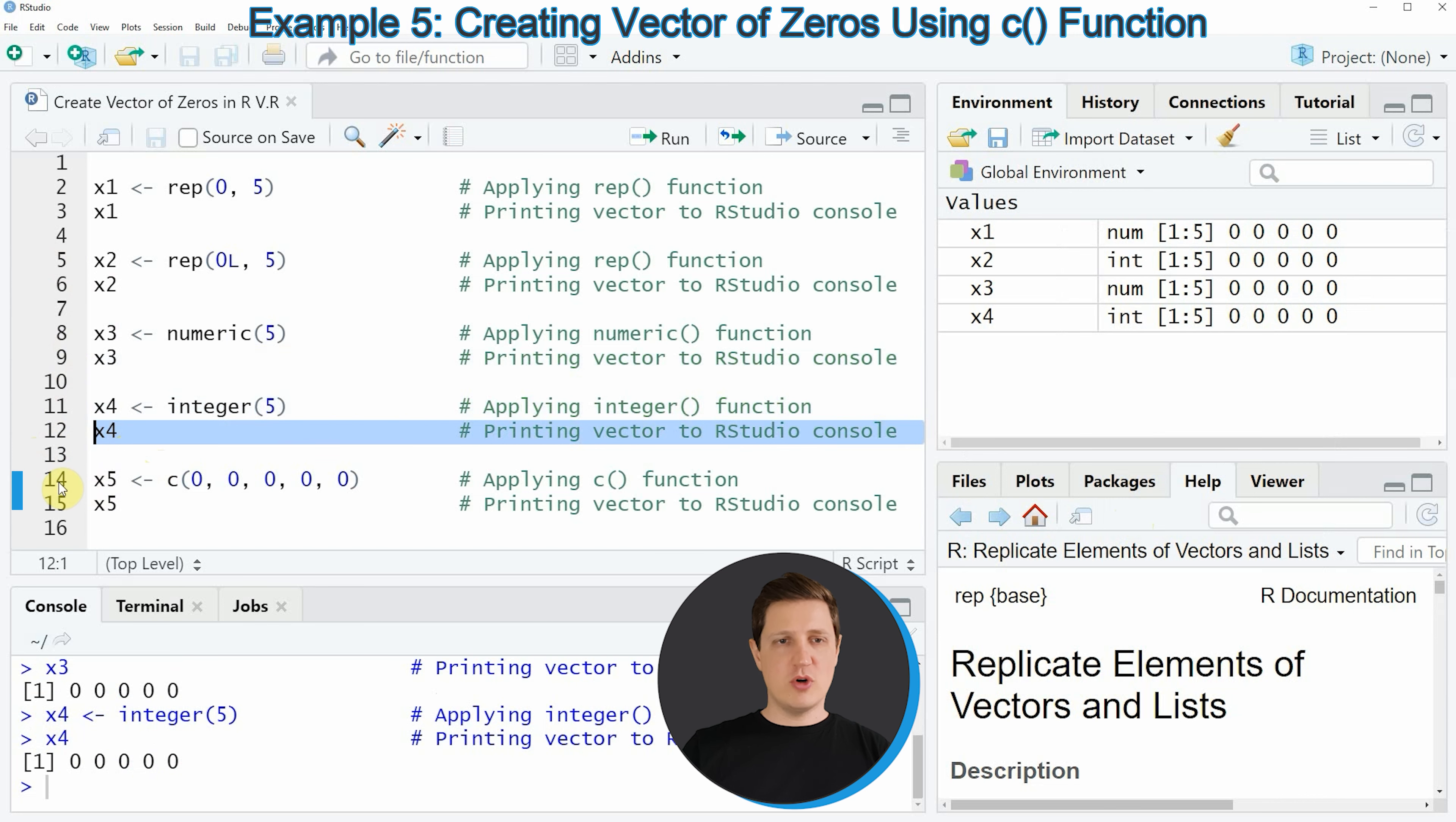Finally I want to show you how to use the c function to create a vector of zeros. This is probably the most complicated or the most inefficient way to create a vector of many zeros but if you want to create a vector with only a few zeros you can use the c function as well.